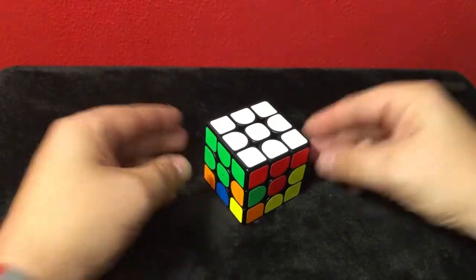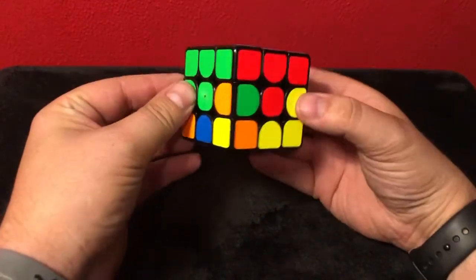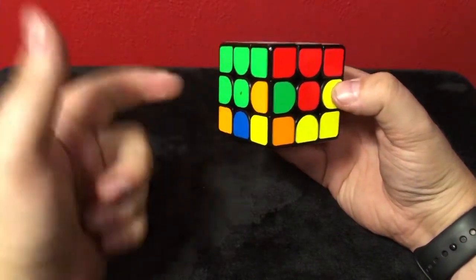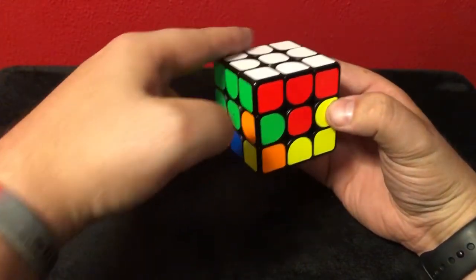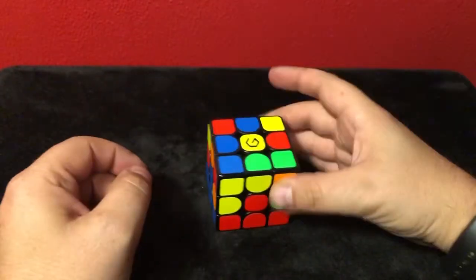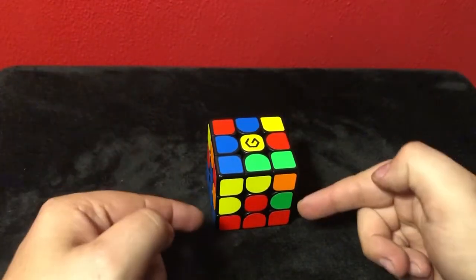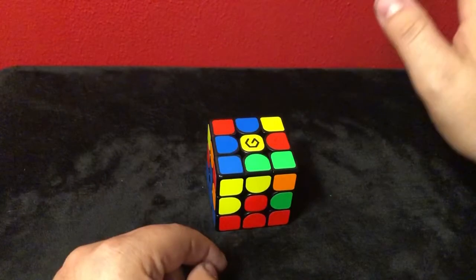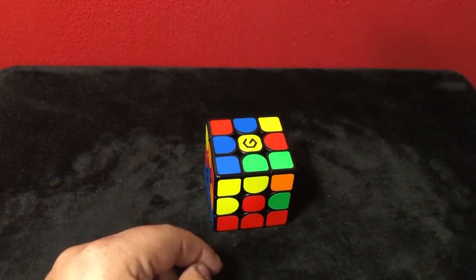Okay, so side piece time. What do we do? More algorithms. This is what I do. I got the white side done. I don't want to see it anymore. Flip it over. Gone. We're not even worried about the white side anymore. It's done, forgotten, forever.